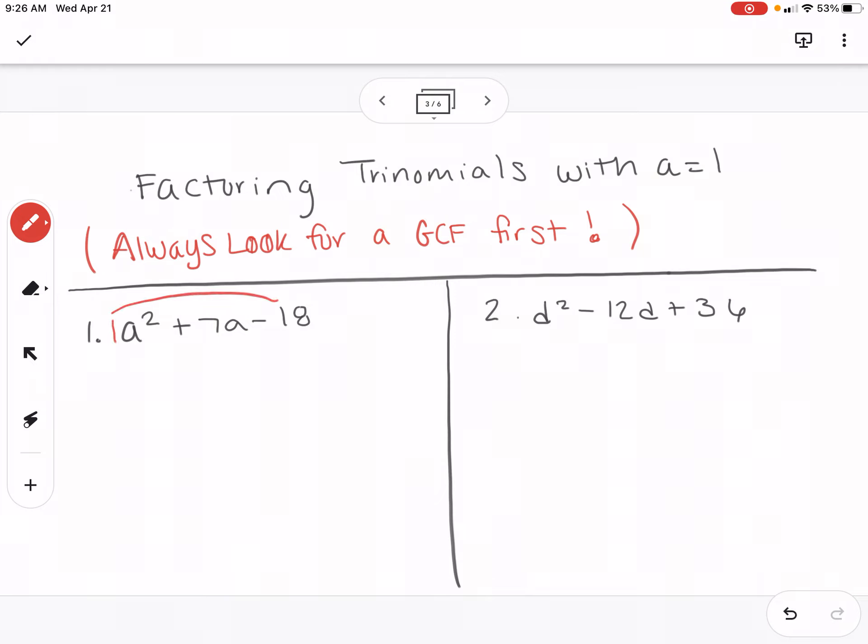When you do that, you always multiply the first number times the last. So one times negative 18 is negative 18. And now I'm going to set up my blanks. My second blank, I always use that middle number. Now I'm going to make a list of numbers that multiplies to 18. I won't worry about the negative until the end.